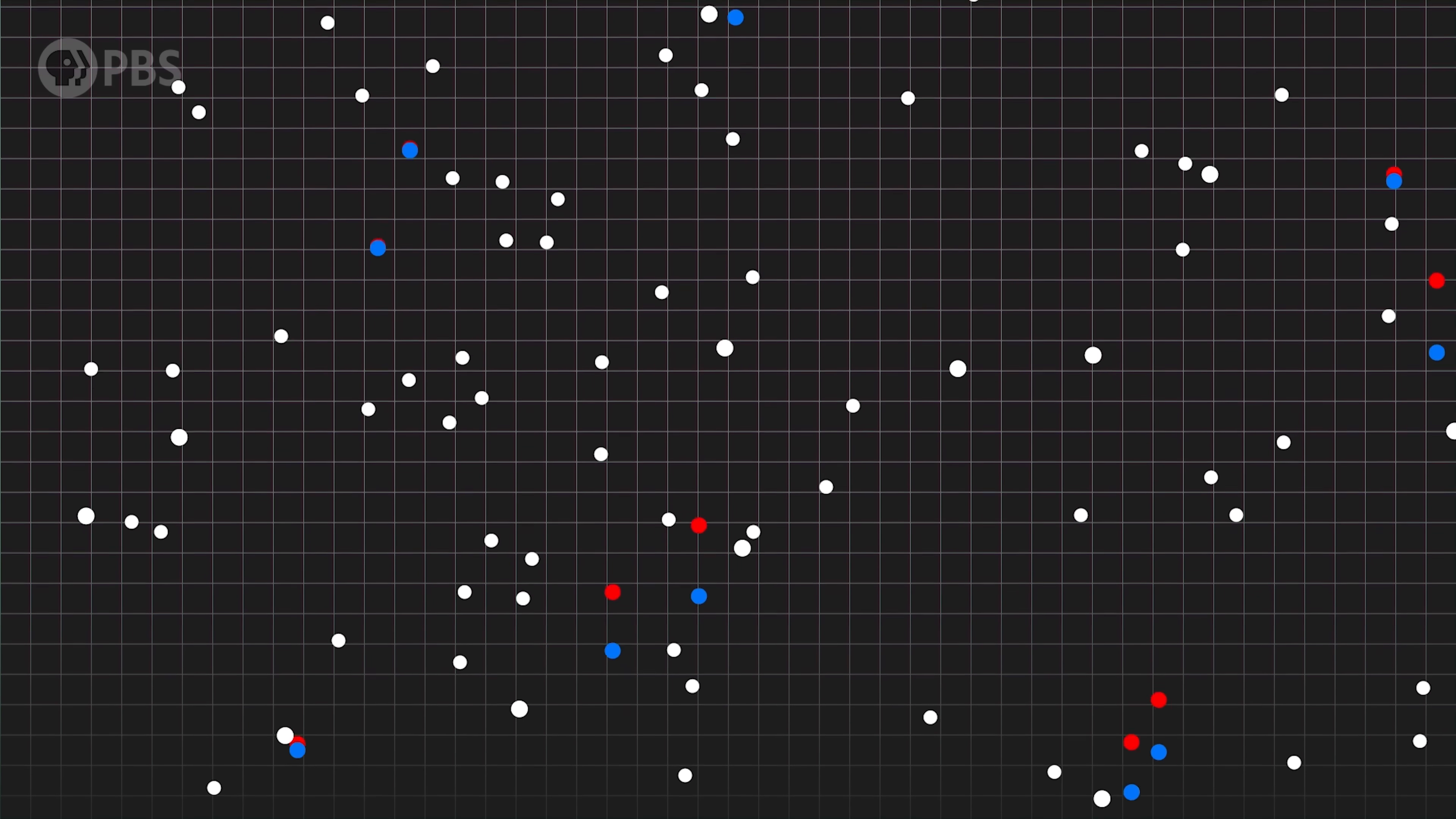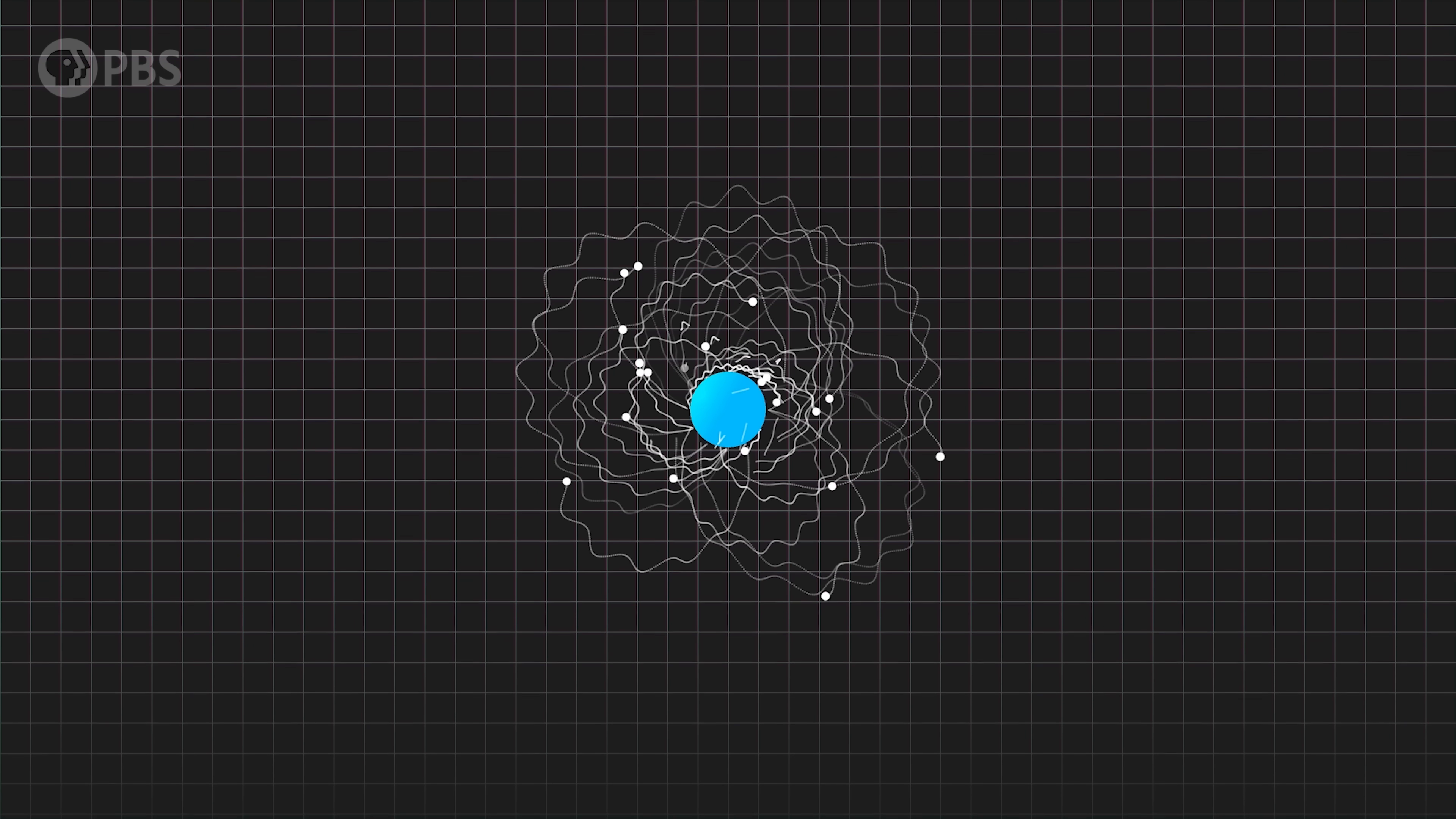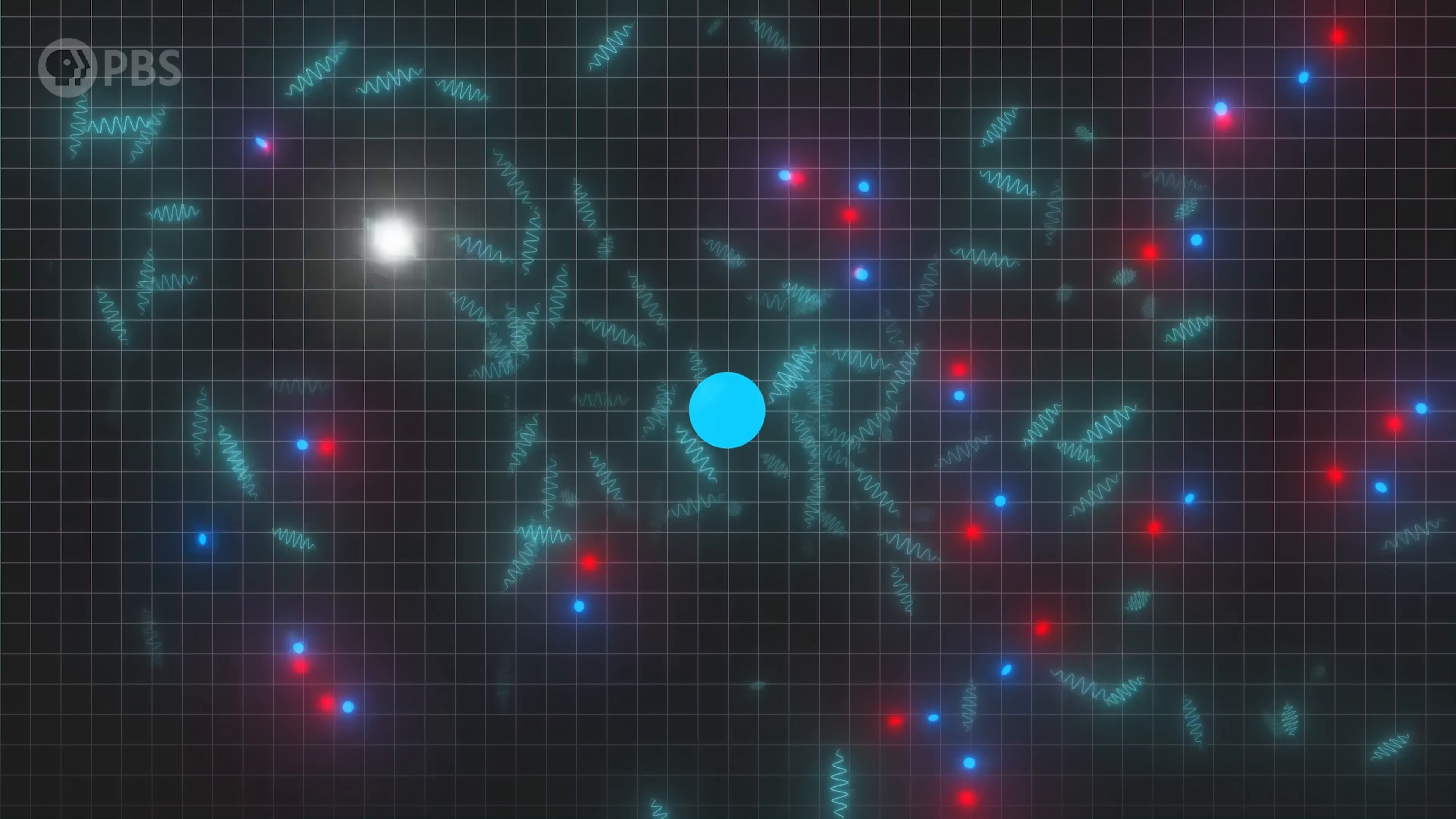Quantum fields are sometimes described as these roiling oceans of virtual particles appearing and vanishing. This isn't very accurate. Instead, think of a quantum field as having the potential for complex and random fluctuations when it encounters a real particle. Those fluctuations can be modeled using virtual particles as a mathematical tool. We can model the Coulomb force in terms of virtual photons in the EM field imparting momentum between charged particles. Or we can model the spontaneous transfer of energy between the EM and electron fields in terms of a virtual photon turning into virtual matter-antimatter pairs. Pair production.